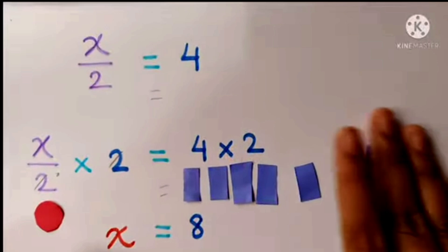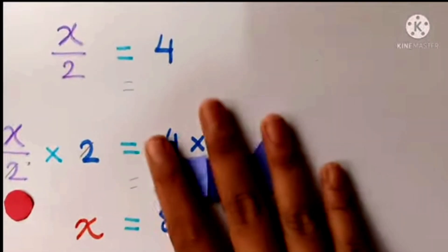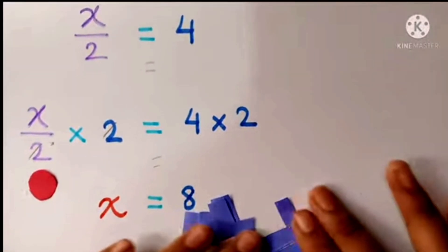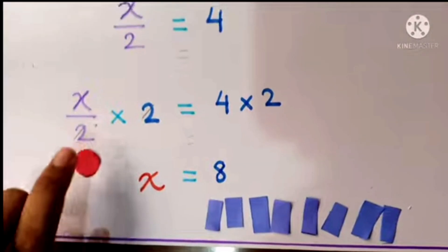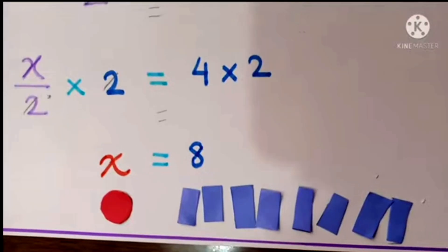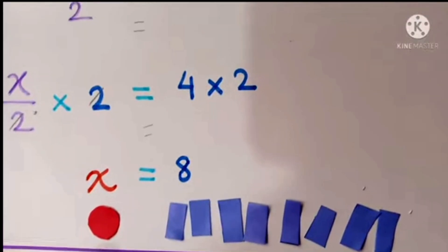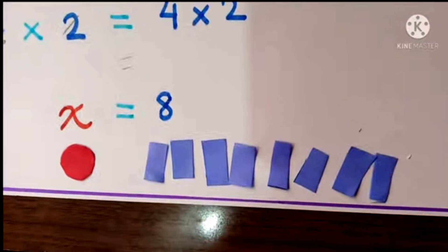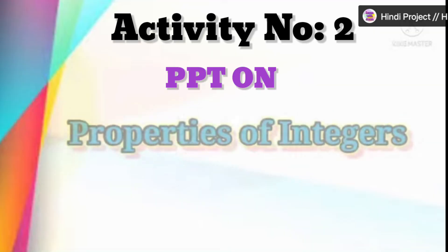4 into 2 will be 8, so here let's take 8. Our 8 comes here and x comes here. So the solution is x is equal to 8. Here our last equation is done.